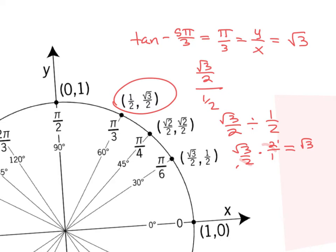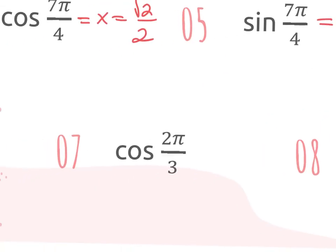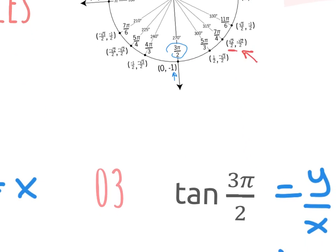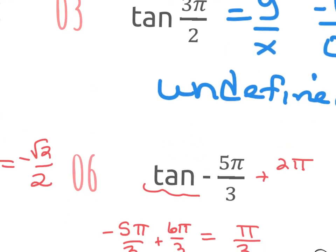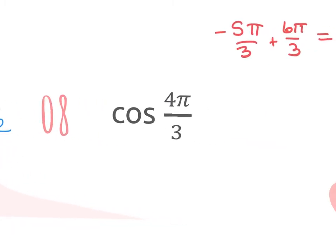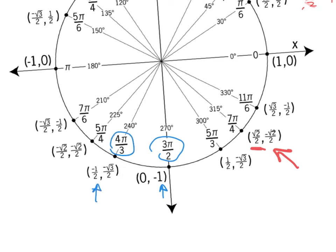Let's try another one. Number 7 is 2 pi over 3, which is on the unit circle — located right here. It's asking for cosine. Cosine takes the x, so the answer is negative 1 half. The last one, cosine of 4 pi over 3 — again, cosine looks at x. 4 pi over 3 is located right here. The x is negative 1 half.